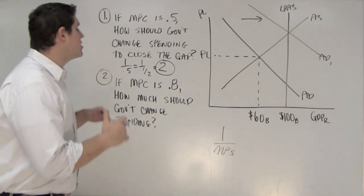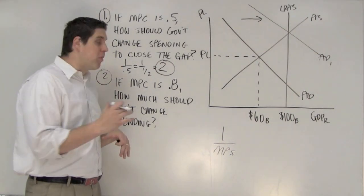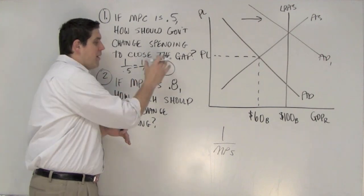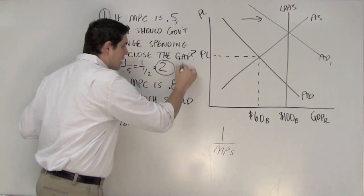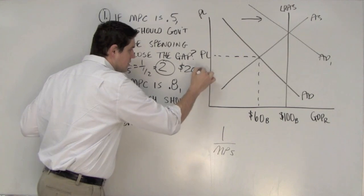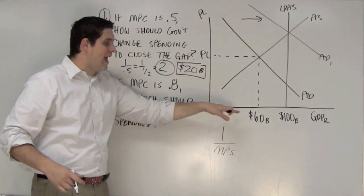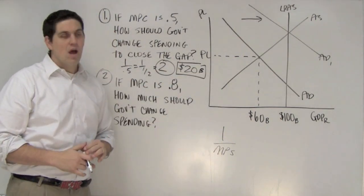The question is, if the government spends, and it gets multiplied times 2, whatever that amount is, it gets multiplied times 2, it needs to close the gap. Well, the gap's 40, and so the answer is 20 billion dollars. 20 billion times 2 would close that gap of 40 billion dollars.